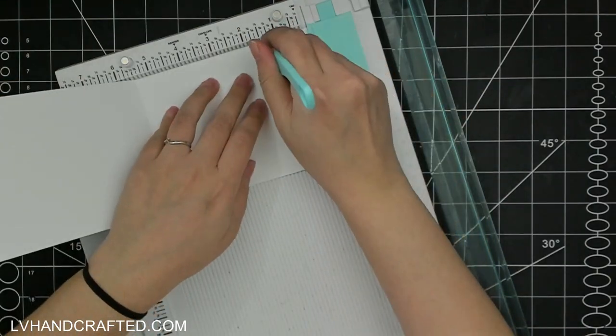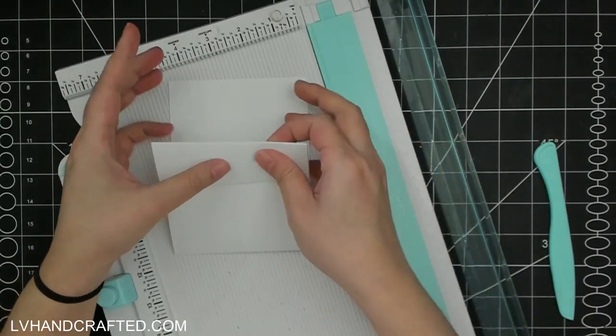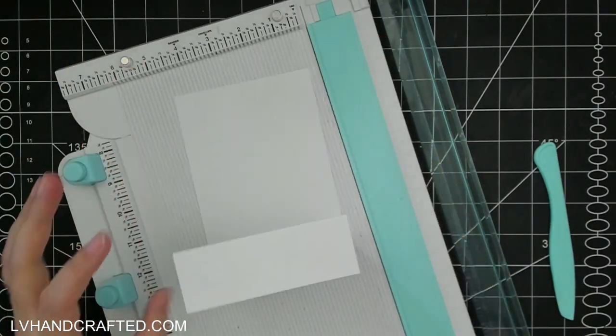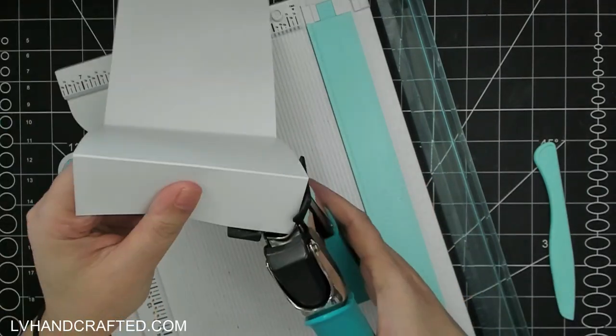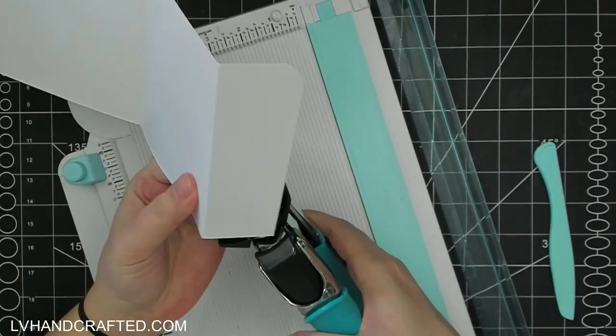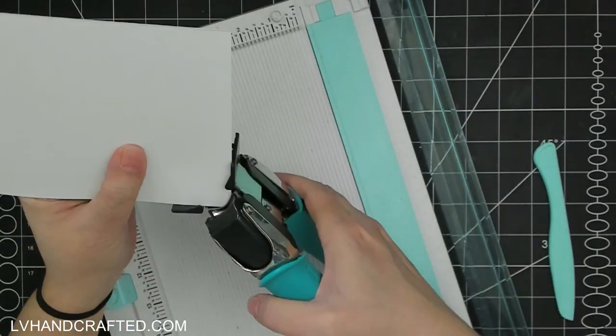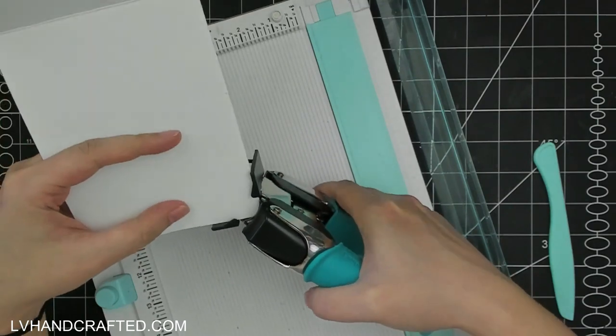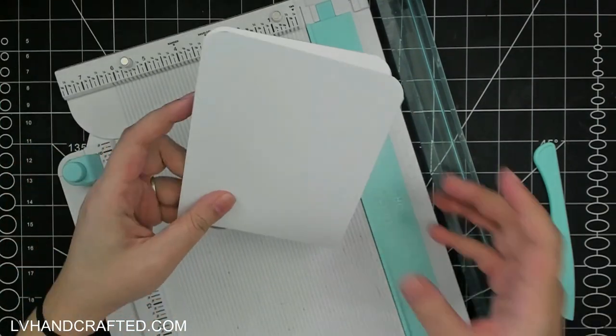The five and a half inch score line you want to fold as a mountain fold so that's your standard top folding tent card and then at the one and a half inch score line you want to fold that as a valley fold and that section is going to be the front of the card. I'm going to round my corners with my corner chomper here and that is our card base complete cut and scored and folded.